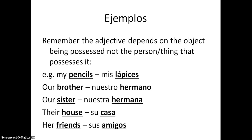'Our brother' — now, it could be two girls talking about this, but because the word 'brother' is masculine and it's singular, they'd still use nuestro, not nuestros. 'Our sister' — nuestra hermana — because hermana is singular and feminine. 'Their house' — there's only one house, so we use the singular form: su casa, because casa is singular. It's also feminine, but there isn't a feminine form for this. And 'her friends' — sus amigos — she's not plural, but her friends are, so that's why we use sus.